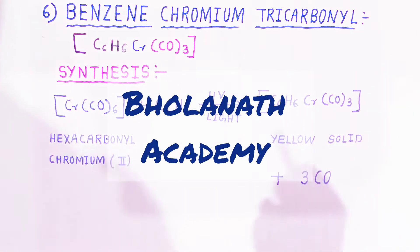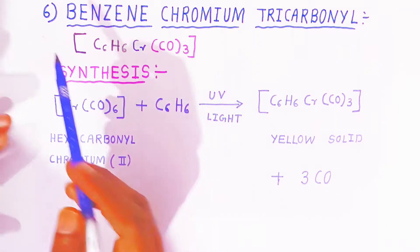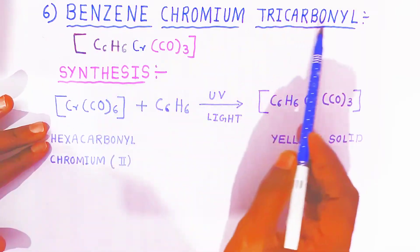Hello students, once again welcome to Bholanatha Academy. In organometallic chemistry, the sixth type of organometallic compound is called benzene-chromium-tricarbonyl.